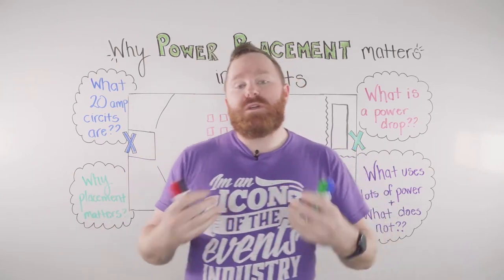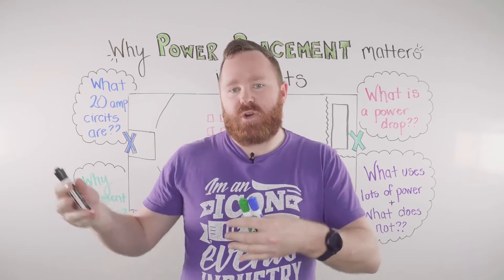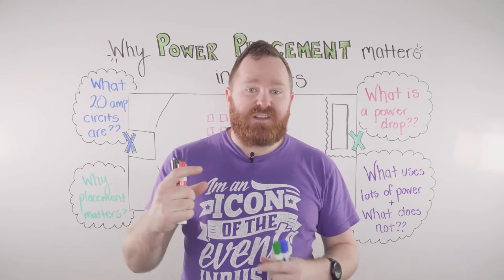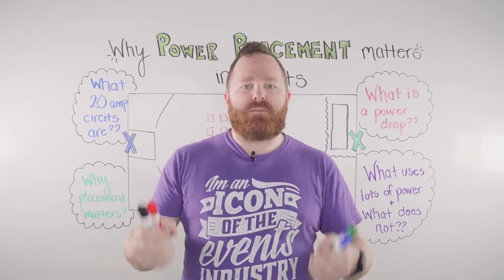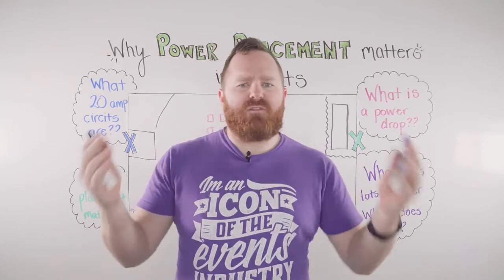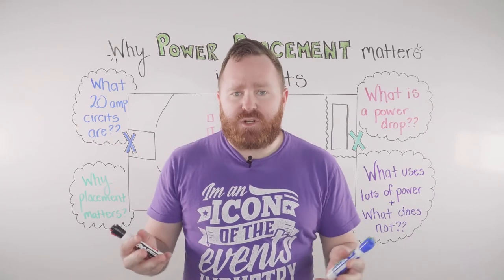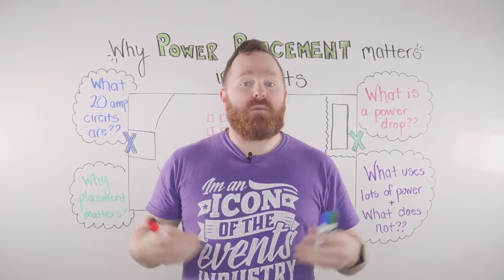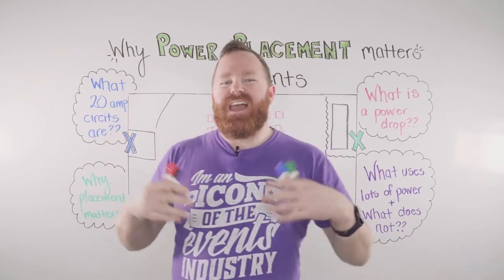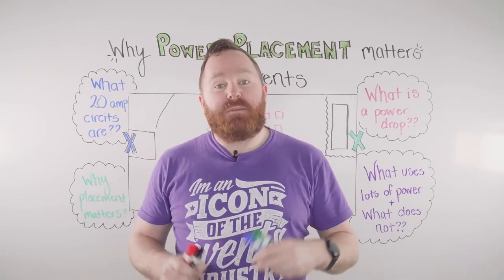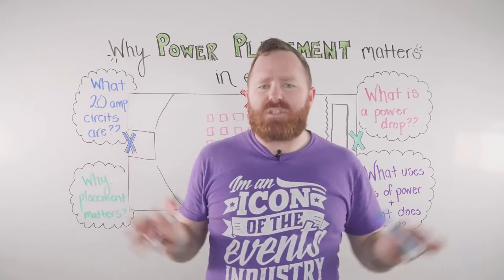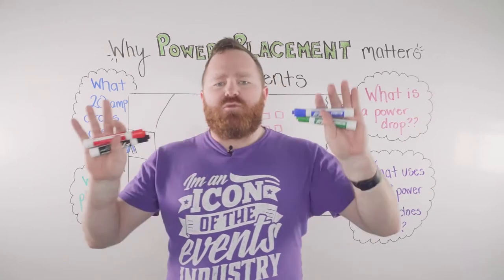When it comes to power for an event, you always talk about measuring things in what's called a 20 amp circuit — sometimes 15 amp circuits if it's an older building. Essentially, a 20 amp circuit is a single outlet. Whenever you're talking about power, you want to talk about allocation in that amount. So for example, if you need a ton of lights, you might need five 20 amp circuits just for that. This is about the normal power in the room — how many outlets there are and where they're placed.